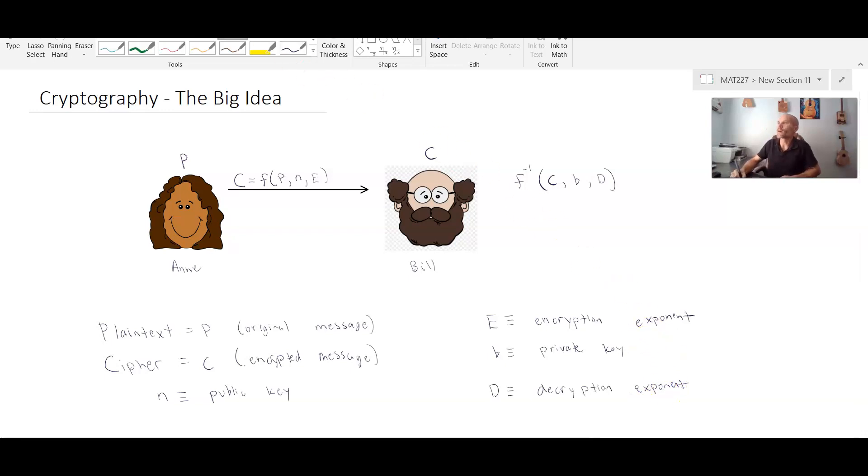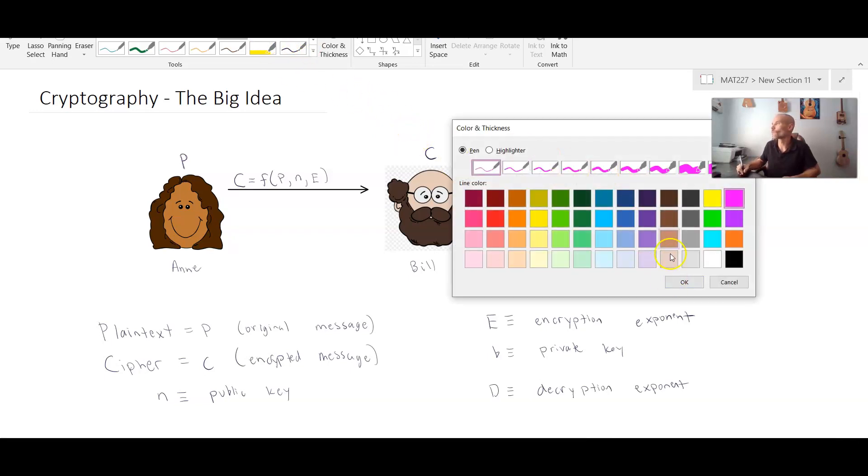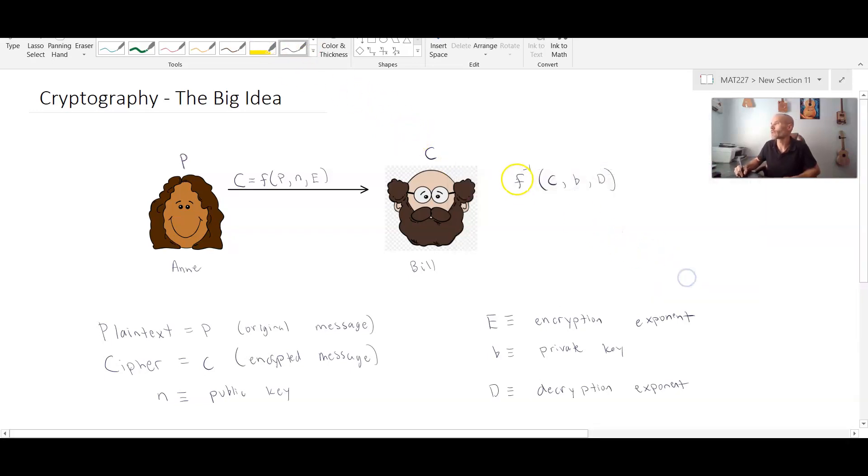Now one thing that we know about functions is that this will produce the value of p. So this will allow Bill to achieve the value of p.